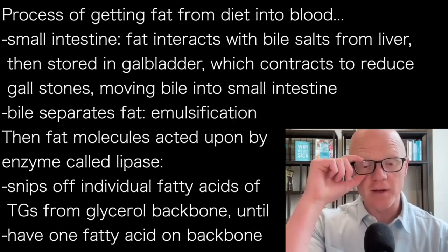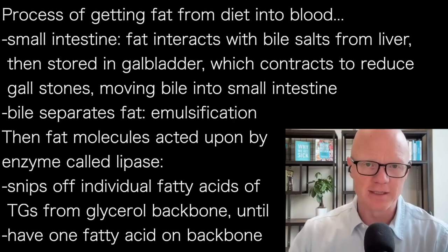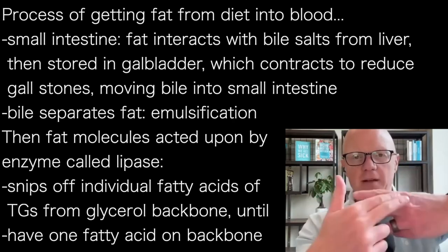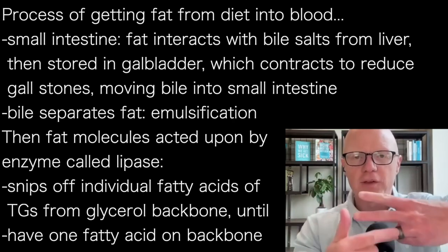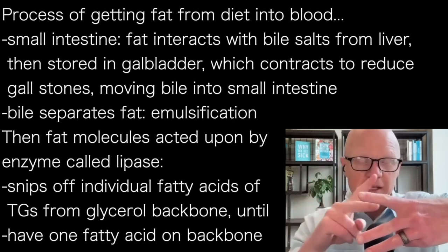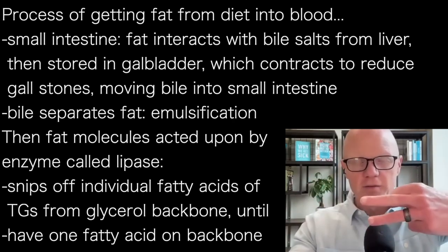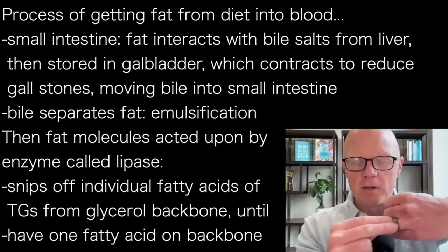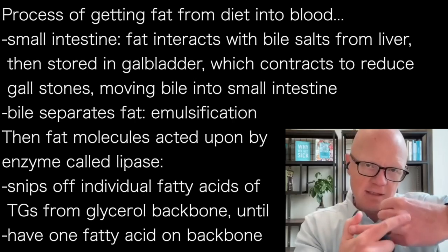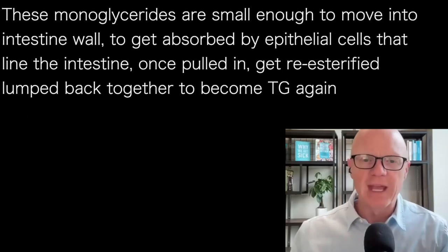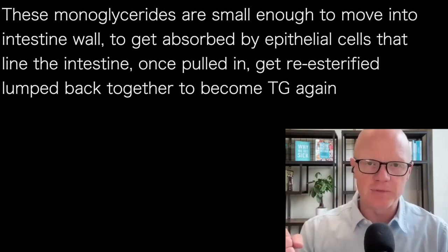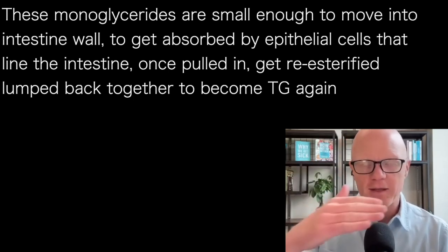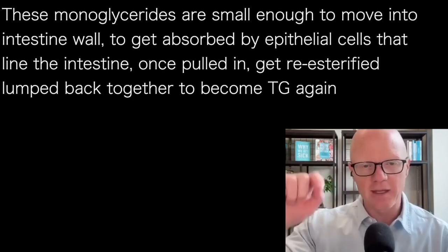Now the molecules are small enough to be acted on by an enzyme — a series of enzymes called lipase. The lipase starts snipping off the individual fatty acids of triglycerides. Here's a triglyceride: my knuckles are the glycerol backbone, and these three fingers are the individual fatty acids. The lipase comes in and snips one of them off — there's one fatty acid now floating. Then it snips the other one off, and we're left with what's called a monoglyceride, where you have one fatty acid bound to the glycerol backbone. These are small enough to get moved into the intestinal wall and absorbed by the epithelial cells lining the intestine.